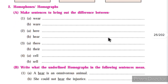The next question covers homophones and homographs — we need to make sentences to bring out the difference between them. Homophones are two words that are pronounced the same but have different spellings and different meanings. Homographs are words that have the same spelling but carry two different meanings.